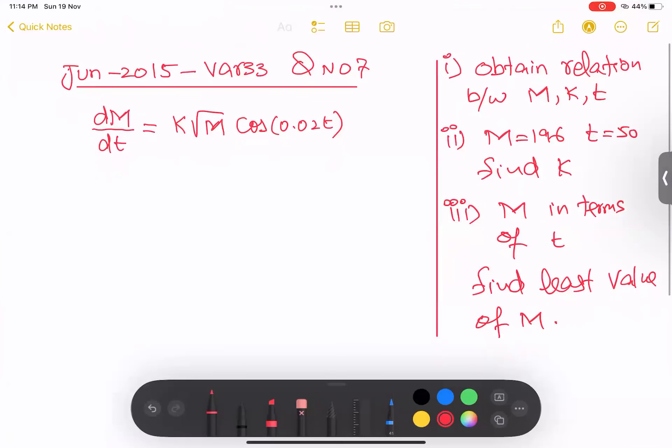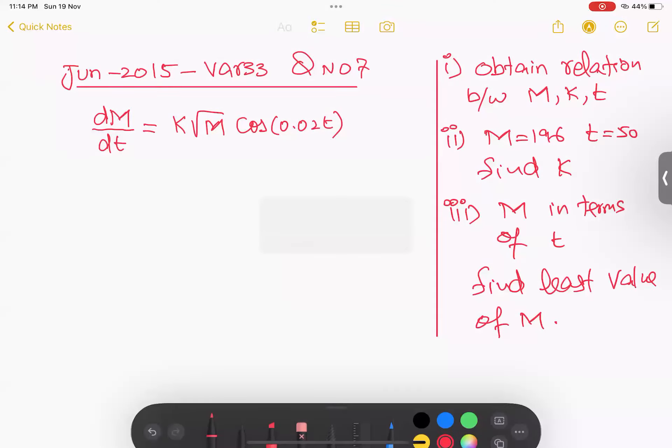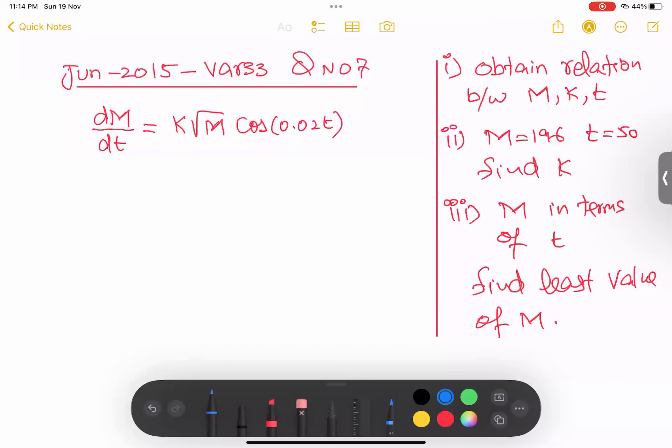This question is mentioned here. So first of all, step number one, separation of variables. dT will multiply here and root M will come under M. So this is called separation of variables. All T right hand side, and all M left hand side. It's called separation of variables. And now I'm integrating.